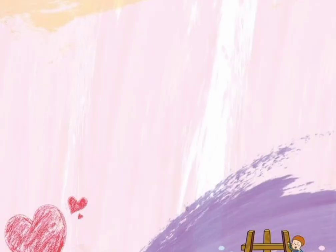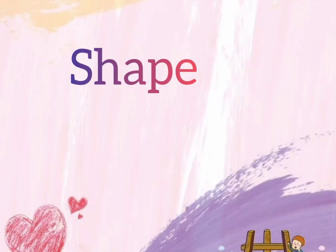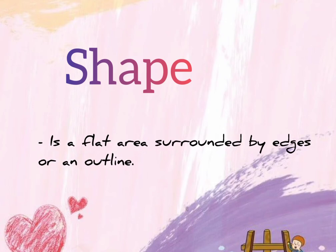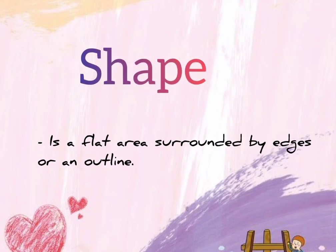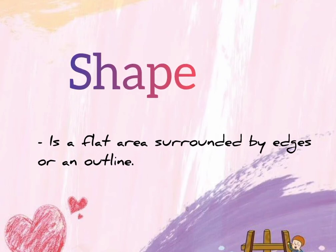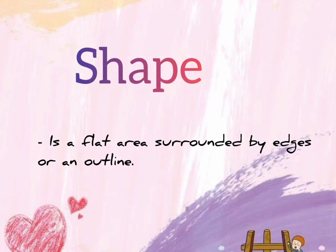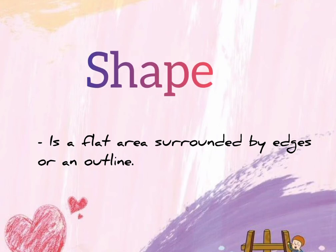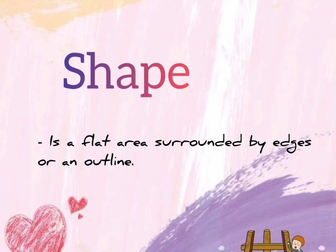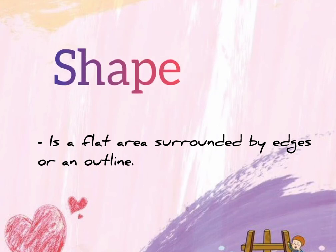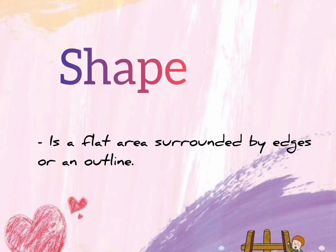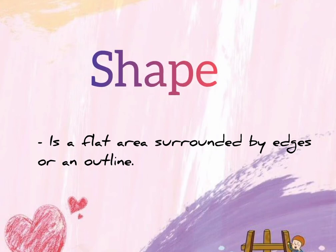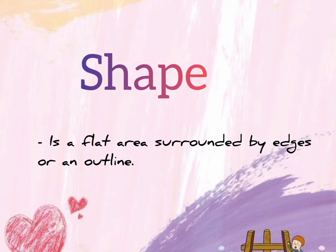The fourth element is shape. Shape is a flat area surrounded by edges or an outline. Artists use all kinds of shapes. Geometric shapes are precise and regular, like squares, rectangles and triangles.